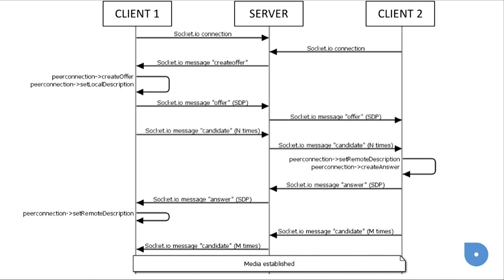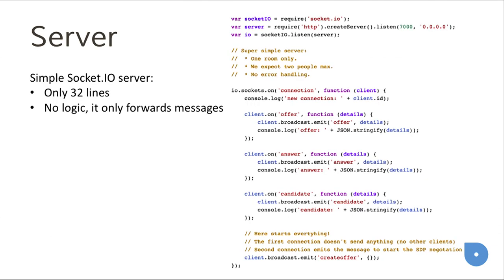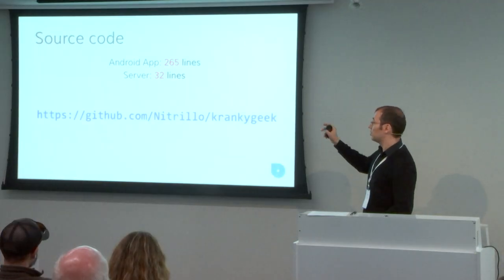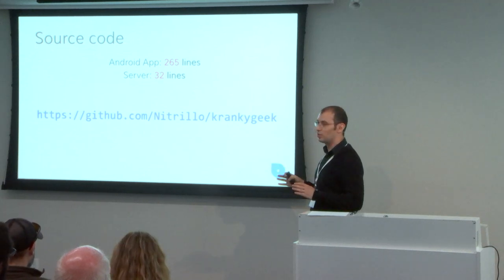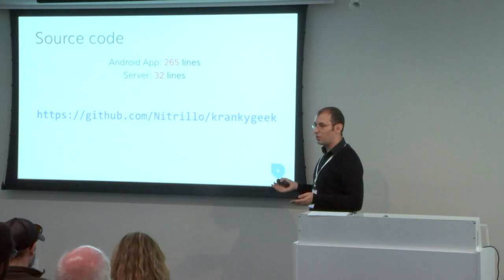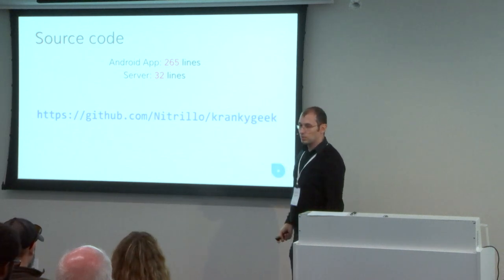At the end of this process, media is established. The server is something that Android developers may not be used to, but it's as easy as about 30 lines of Socket.io code with no real logic — it just relays offer, answer, and candidate messages to the other peer. The Android application itself is also very small — only 260 lines of code for the minimum needed to have video working, with no error handling but easy to understand.